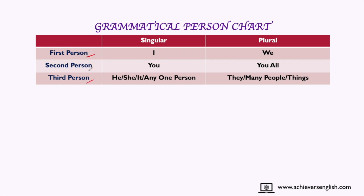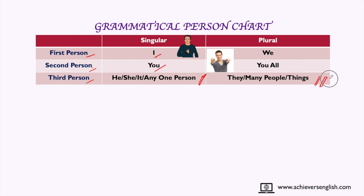In English grammar, persons are divided into three categories: first, second, and third. The first person is 'I,' the second person is 'you.' If you remove 'I' and 'you,' everything else is third person. If it is one person or thing, it is third person singular; if there are many, it becomes third person plural. First person plural is 'we' because 'we' includes 'I.' If 'you' is second person singular, then 'you all' will be second person plural.